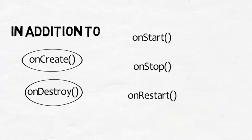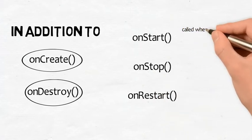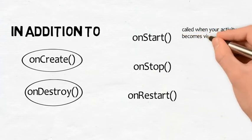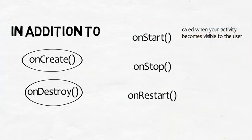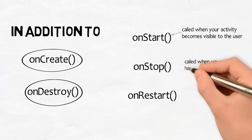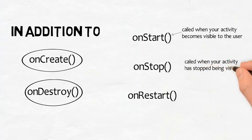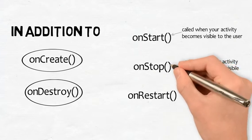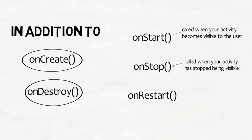Just as with onCreate and onDestroy, your activity inherits these methods from the Android activity class. onStart gets called when your activity becomes visible to the user. onStop gets called when your activity has stopped being visible — this might be because it's completely hidden by another activity or because the activity is going to be destroyed. If onStop is called because the activity is going to be destroyed, onSaveInstanceState gets called before onStop.